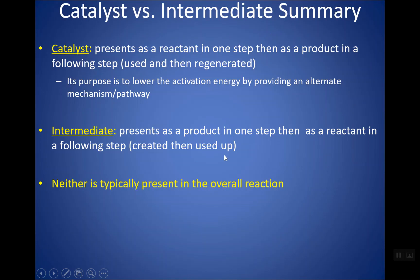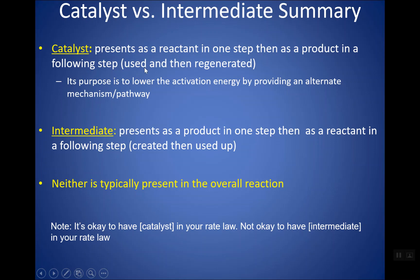A catalyst appears as a reactant in one step and is regenerated later. Its purpose is to lower the activation energy by providing an alternate mechanism. An intermediate is made as a product in one step and then used up in a following step. Neither is typically present in the overall reaction. You can have a catalyst in your rate law, but not an intermediate, because the catalyst is present at start and end and is measurable, whereas an intermediate is used up right away and its concentration is very hard to measure.